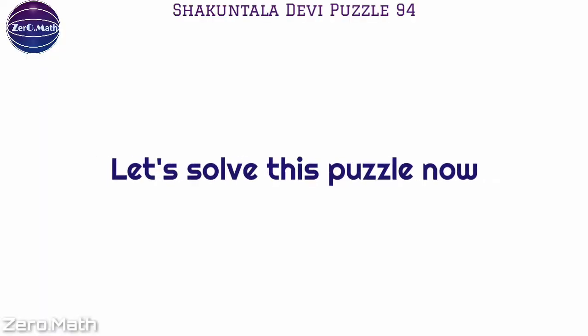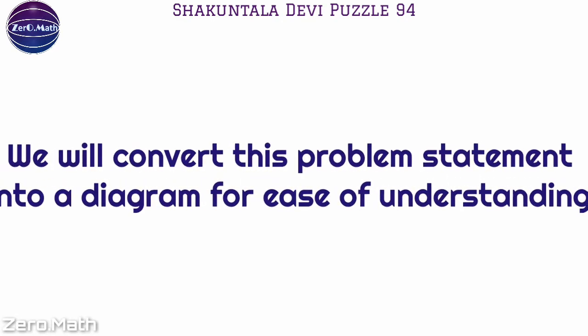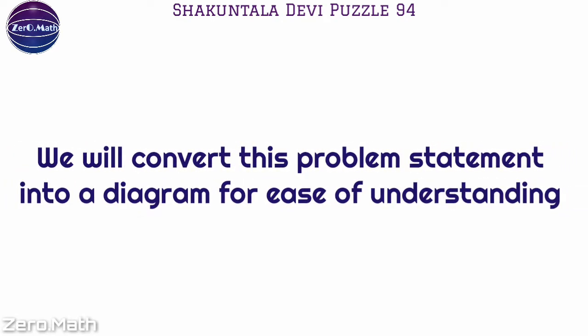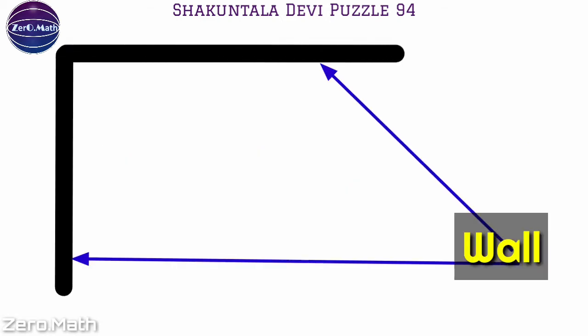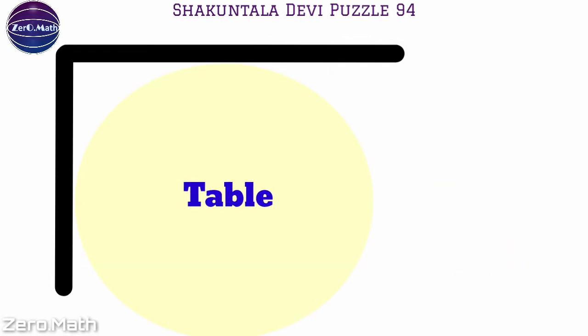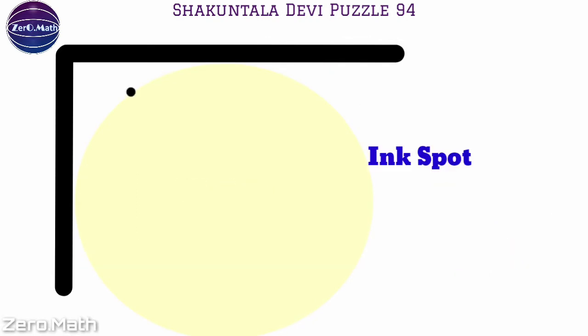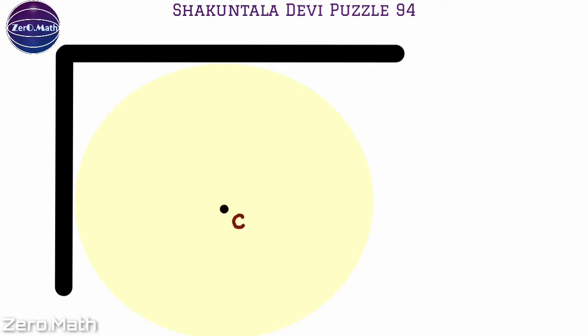Let's solve the puzzle now. We will convert this problem statement into a diagram for ease of understanding. Let's draw a wall and a circular table touching both walls. Let's assume this is the ink spot which has spilled on the extreme edge of the table. This is the center of the table — let's name it C.